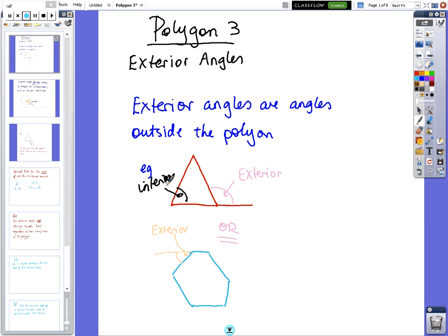OK, so it doesn't matter whereabouts you need to draw it outside. Like for instance, there's another exterior angle there, there's multiple exterior angles. Each one inside has one outside. OK, so copy that and come across.